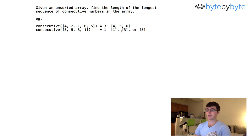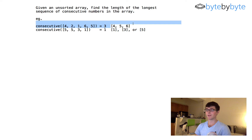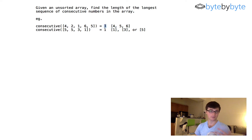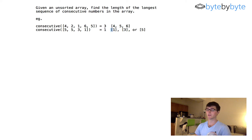Let's go ahead and look at the example we have. In this first example, the longest consecutive sequence is 4, 5, 6, so we would return 3 as the length of the longest consecutive set of numbers. In the second example, there's no consecutive set of numbers, so the length is going to be 1.